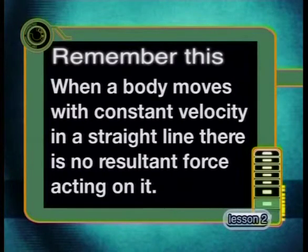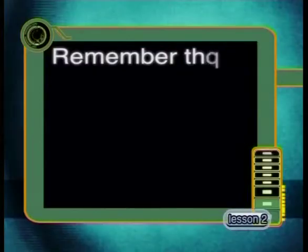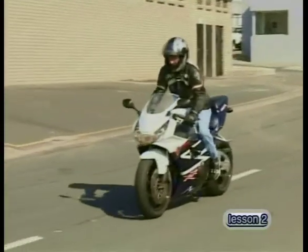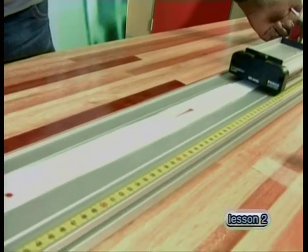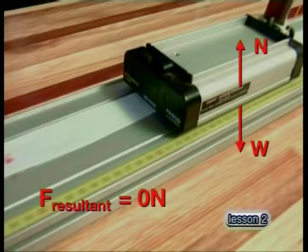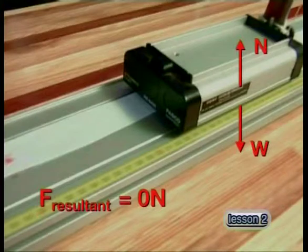According to Newton's first law, when we observe a body moving with constant velocity in a straight line, we can conclude that there is no resultant force acting on it. Forces can bend, stretch, squash, change direction, speed up, or slow down a body. A dynamics trolley travelling at constant velocity in a straight line is not changing direction, speeding up, or slowing down. The weight and normal force act on it but cancel each other out — the resultant force is 0 Newtons and the forces are in equilibrium.